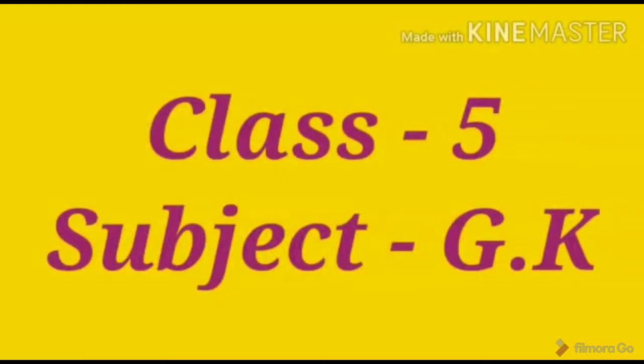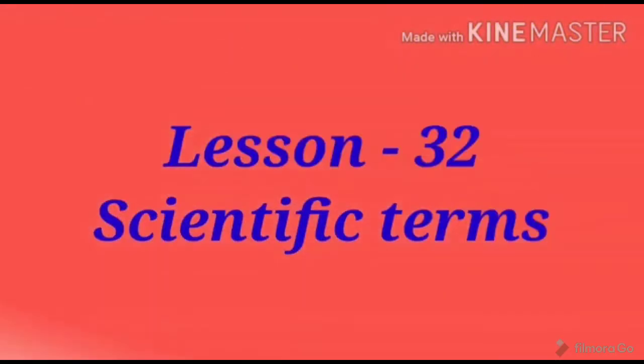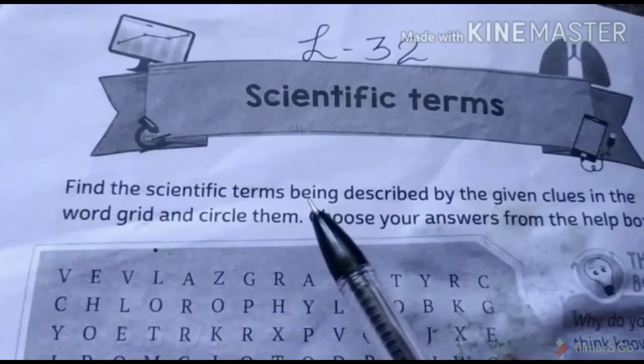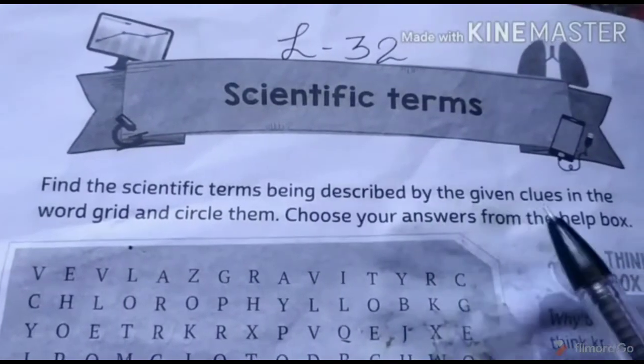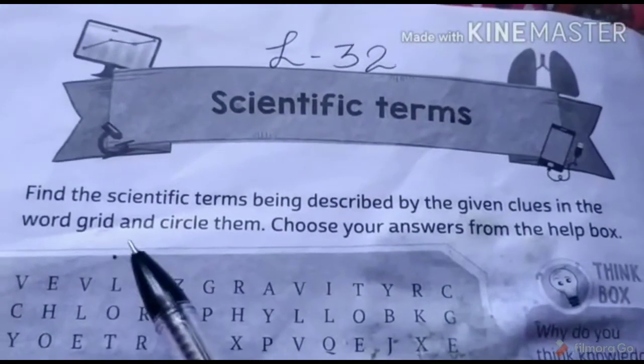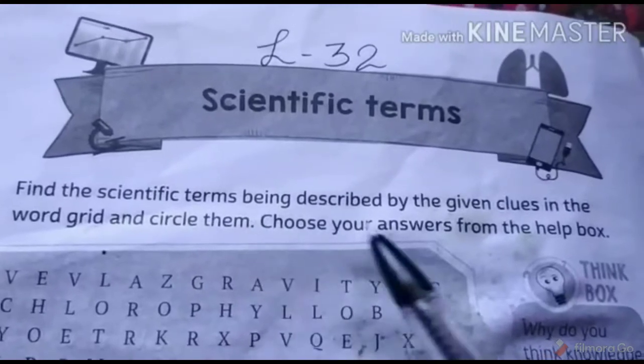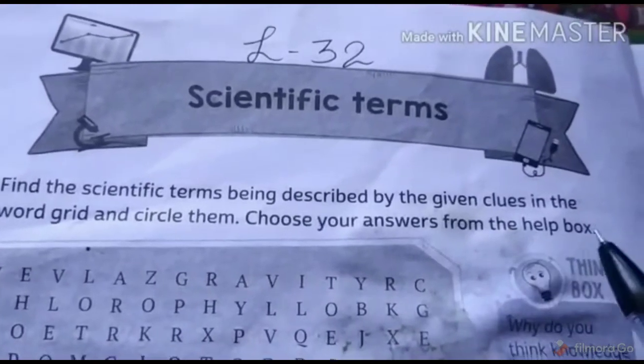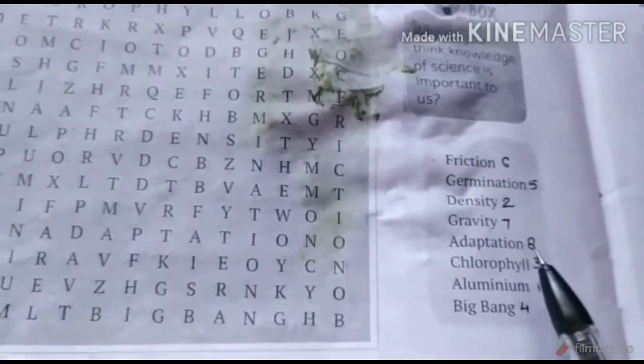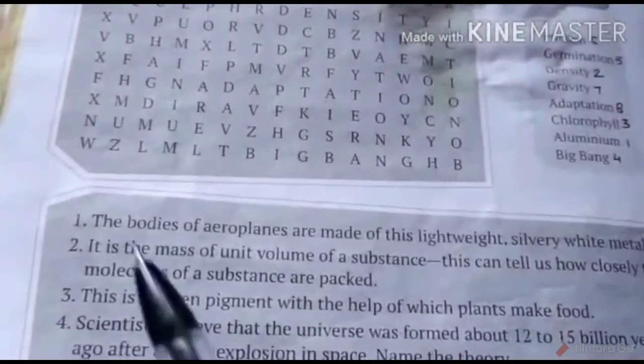Hello dear students, welcome back to your GK virtual class. This is your lesson 32: Scientific Terms. Let's read it. Find the scientific terms being described by the given clues in the word grid and circle them. Choose your answers from the help box — children, this is your help box, you have to choose correct answers from here.